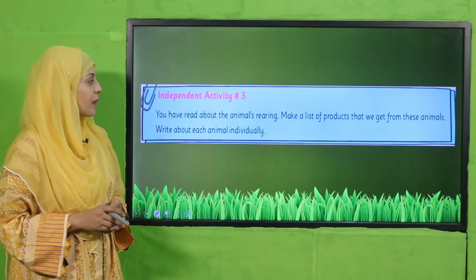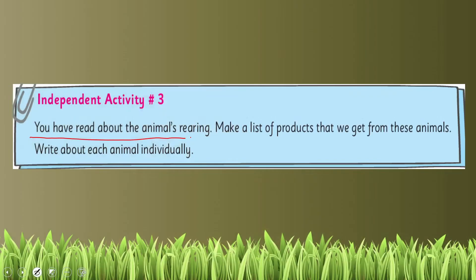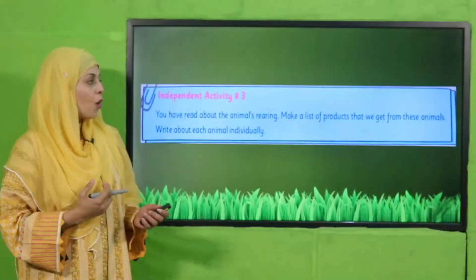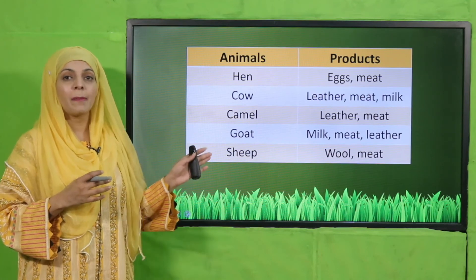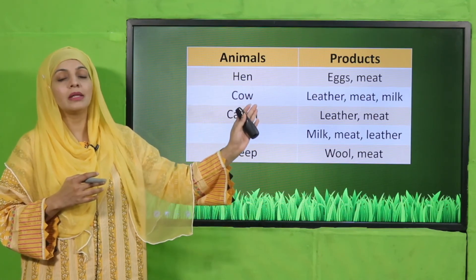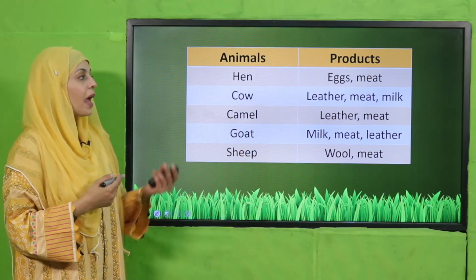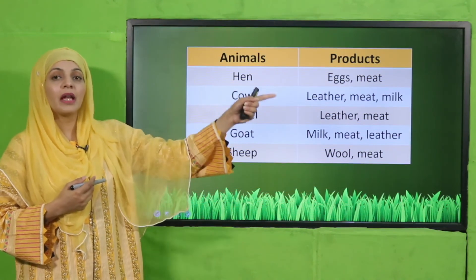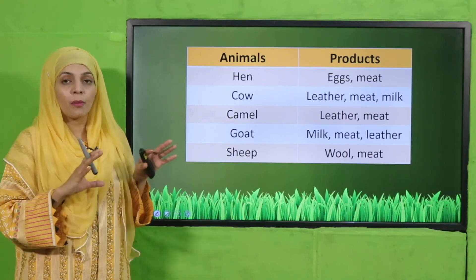For your next homework, complete independent activity number three in your notebooks. You have read about animal rearing — make a list of products that we get from these animals, writing about each animal individually. Draw a table in your notebook with animals on one side and the products we get from them on the other. Animals include hen, cow, camel, goat, and sheep. You can pause the video to complete your homework.